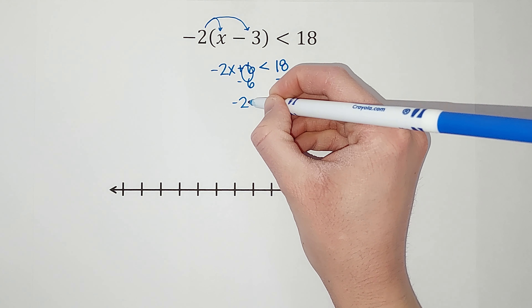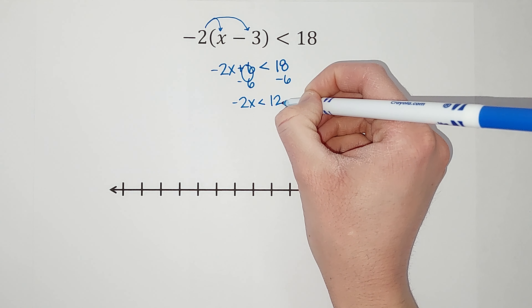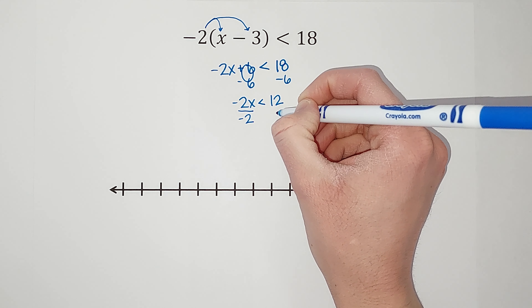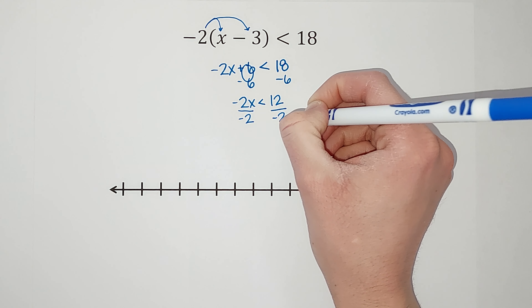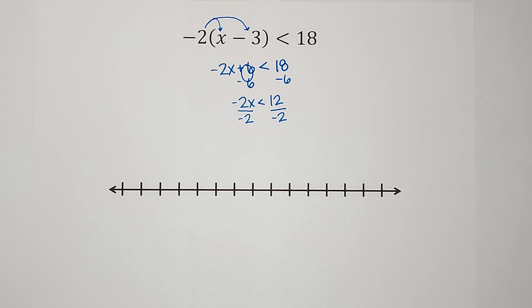So now we have negative 2x plus 6, and this is less than 18. Still trying to get x alone, so I'm going to subtract 6 from both sides. That leaves me with negative 2x is less than 12.